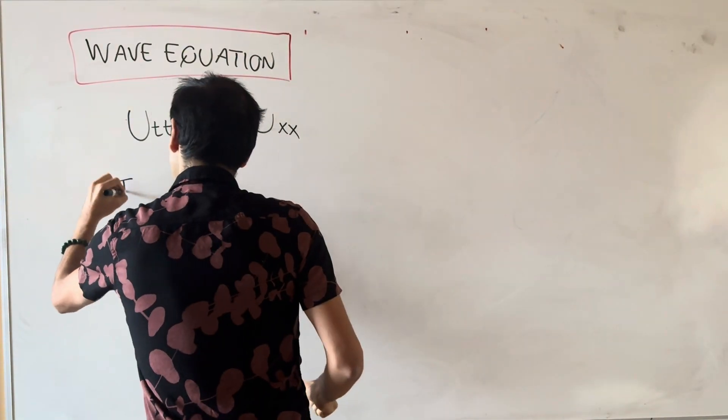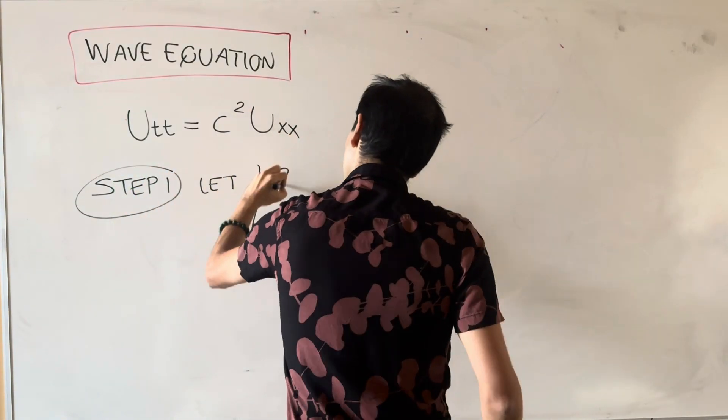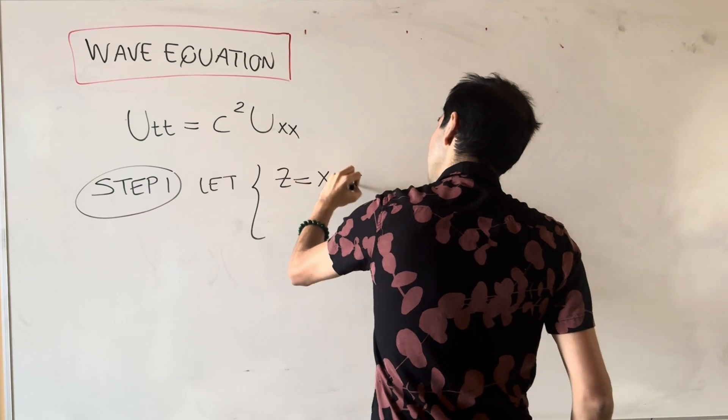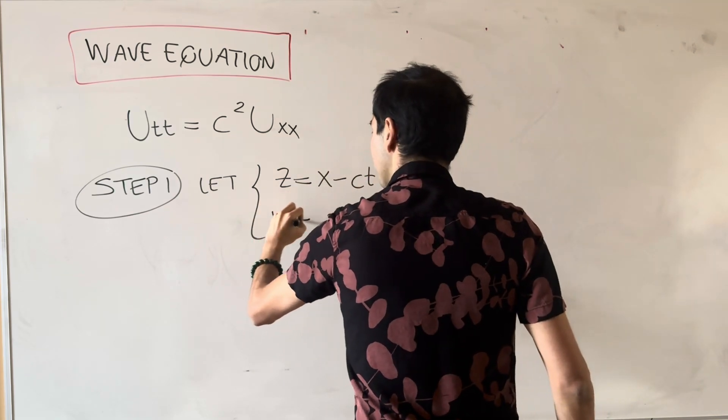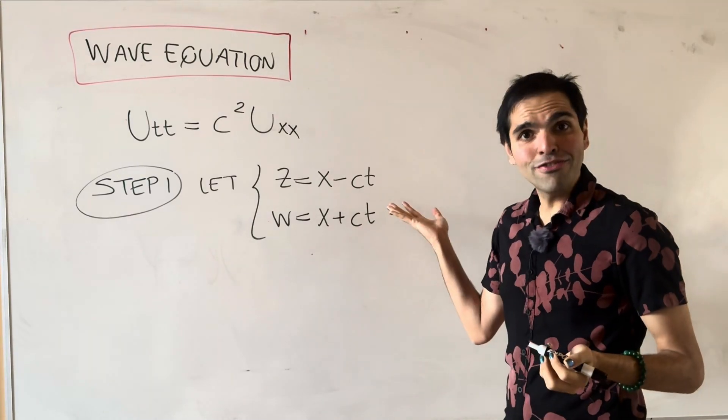So let's first define our coordinates. Here, let z equal x minus ct, and w equal x plus ct. Now, how did we find those coordinates?